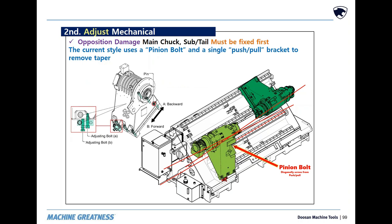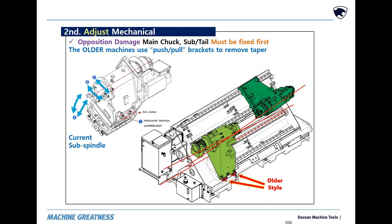Modern main spindles use pinion bolt and single push-pulls to create a sweeping arc with a singular point that is taper-free. Older main spindles, as well as current sub-spindles and tailstock, use multiple points of adjustment as versatility is needed to match precise centering.